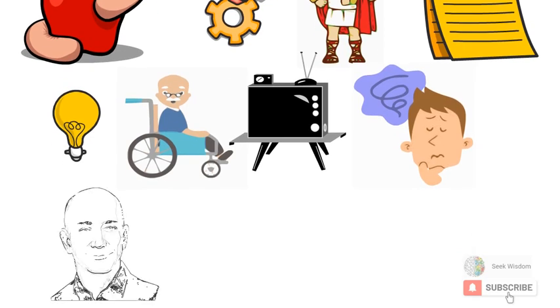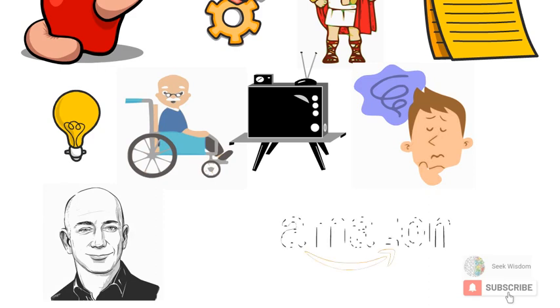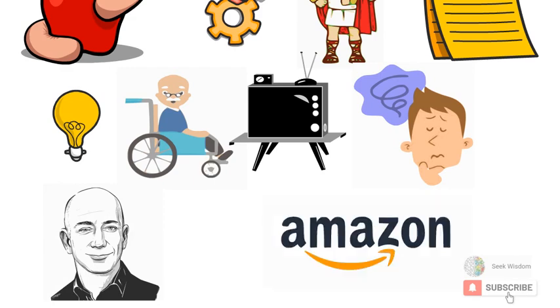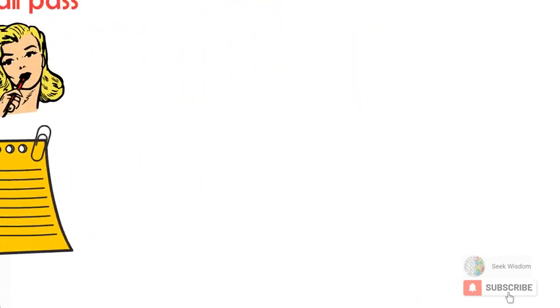Jeff Bezos calls it regret minimization, and it's what he used in 1996 to take the biggest risk of his life. He decided 80-year-old Jeff would be less regretful if he drove to Seattle and founded Amazon, no matter the outcome, than if he stayed in his safe New York consulting gig. Love Bezos or hate him, you can't deny it worked.